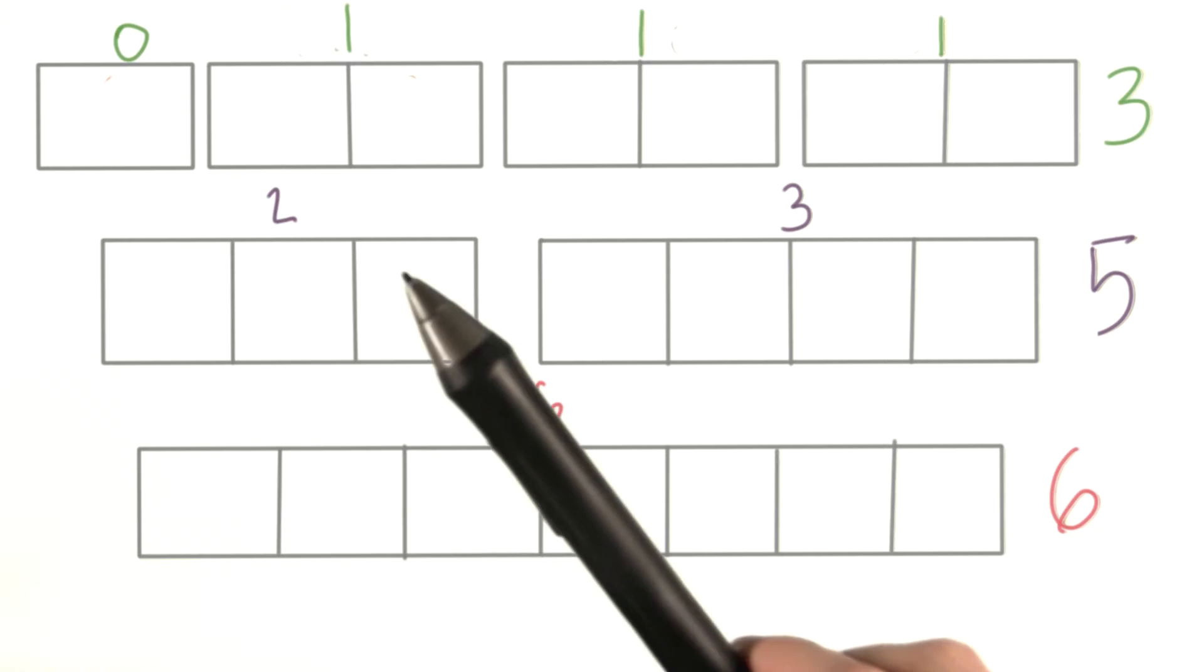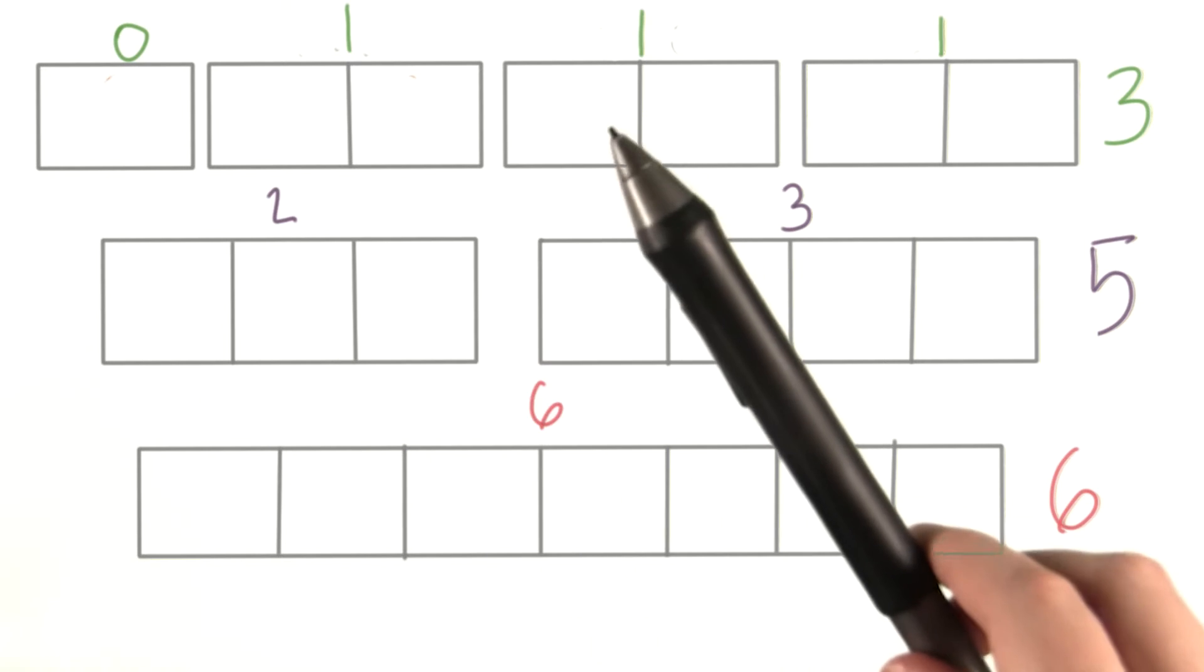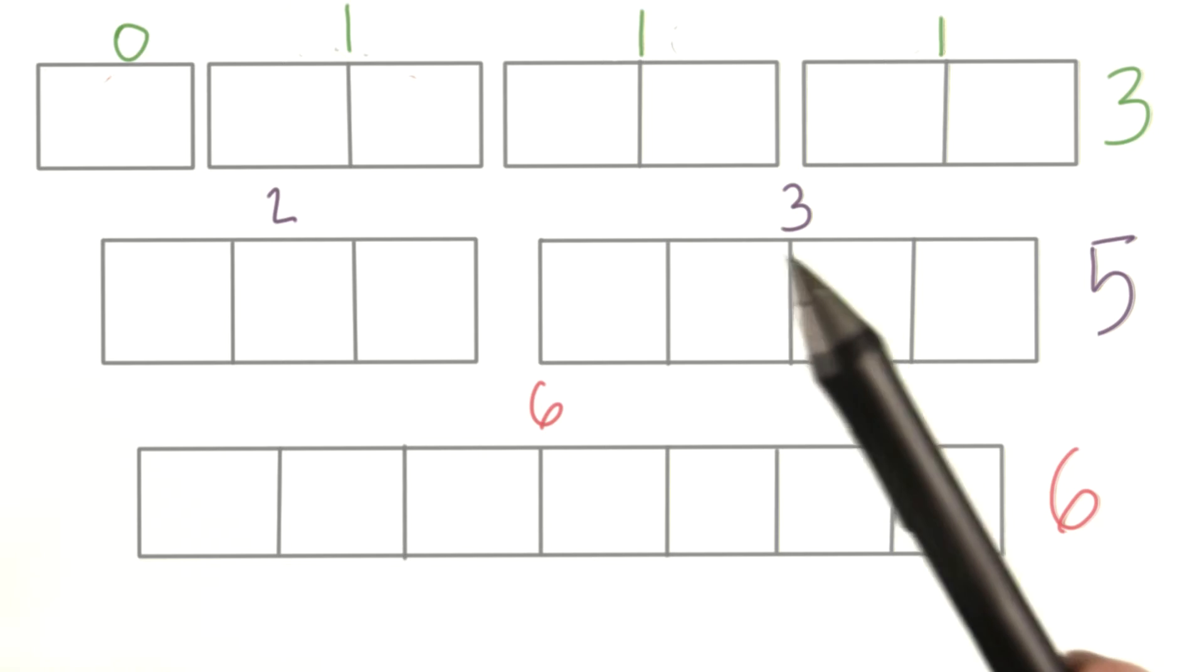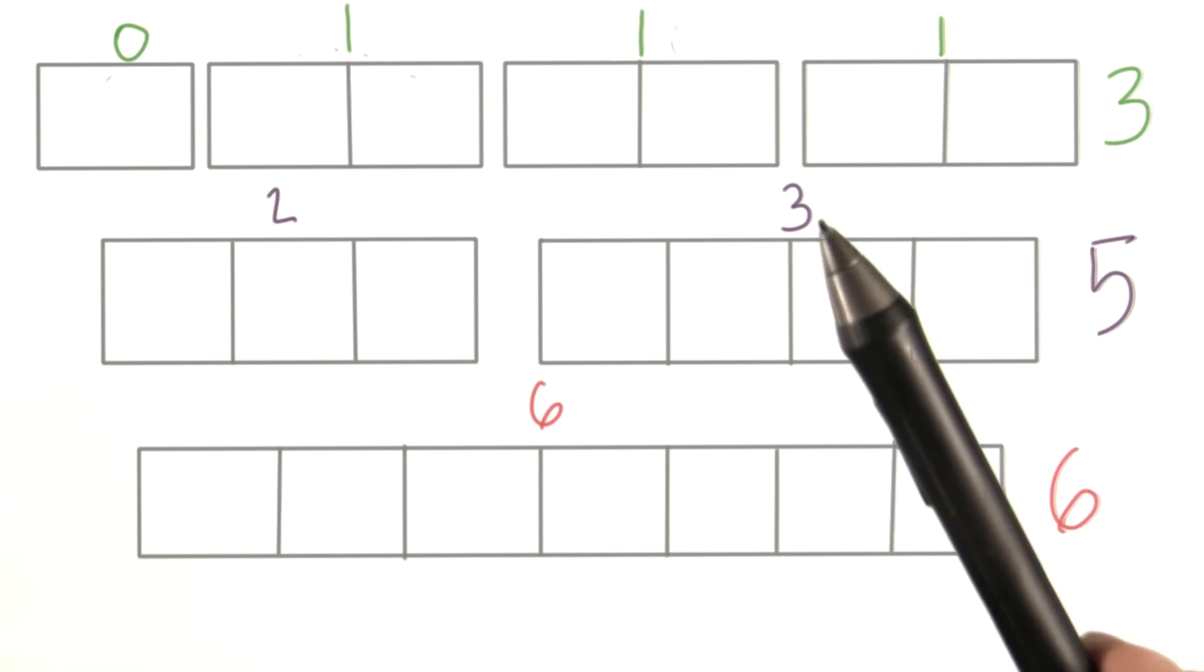When we're building an array of three, we did two comparisons, an array of two, one comparison, and an array of four, we did three comparisons.